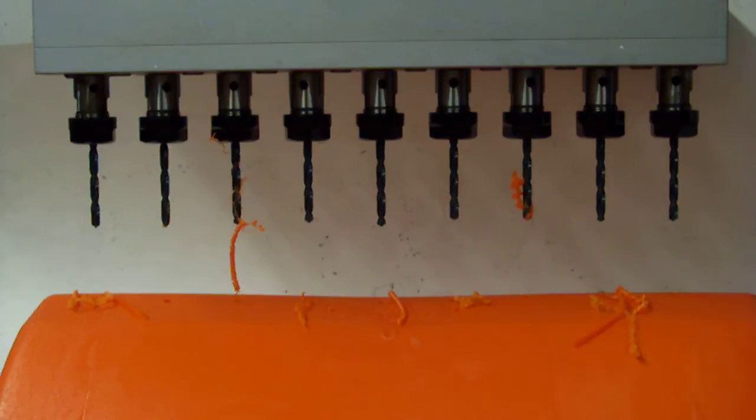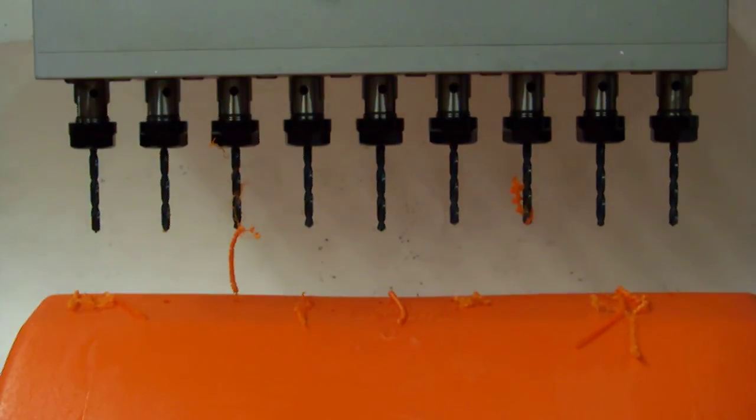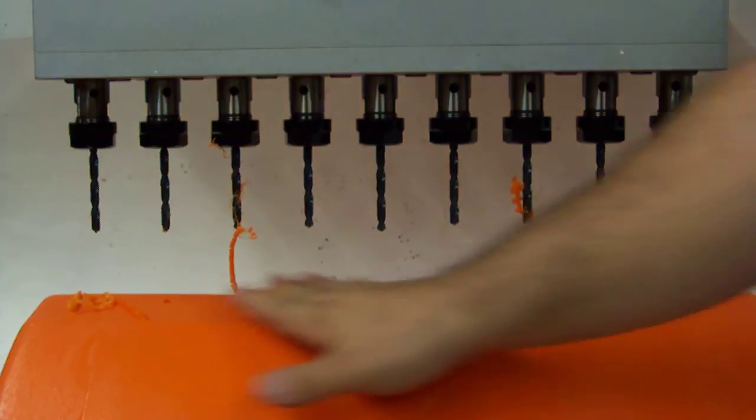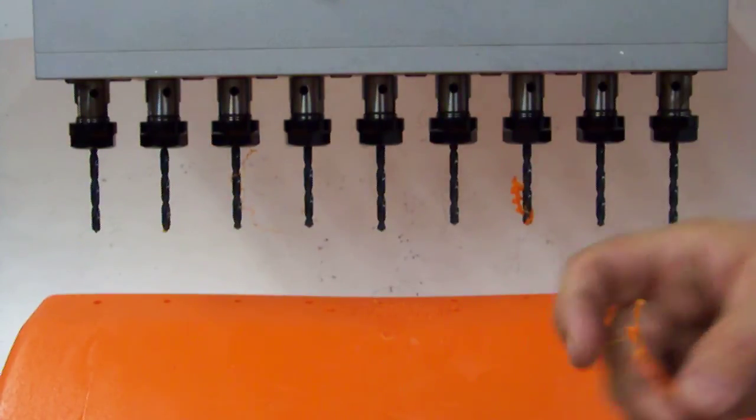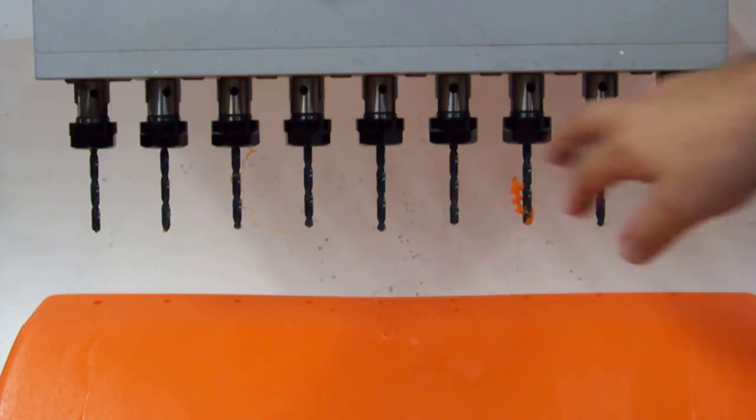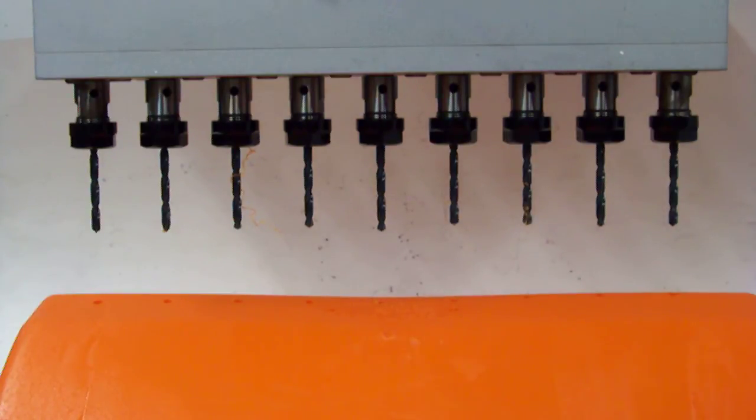As you can see, all nine holes were drilled successfully through the product. The multiple spindle drilling head is a one-to-one ratio from the drill press. It can be run up to 4,000 RPM, and we can make these...